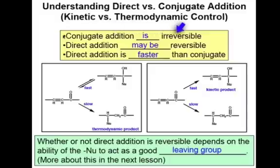Conjugate addition is irreversible. What this means is that once a nucleophile adds to an alpha-beta unsaturated ketone in a conjugate fashion, it's not going to dissociate from that alpha-beta unsaturated ketone. The bond that forms will not break.